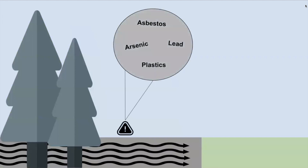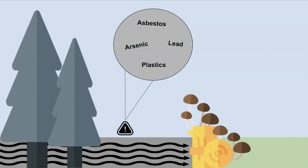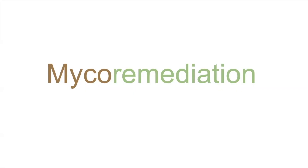But last year in California, an organization placed bales of hay containing oyster mushroom inoculum. This prevented toxins such as asbestos, arsenic, and lead from going downstream and harming the environment. This is an example of mycoremediation.